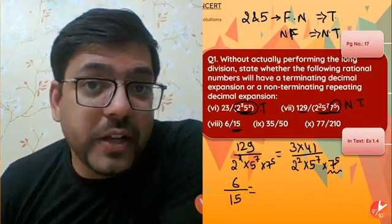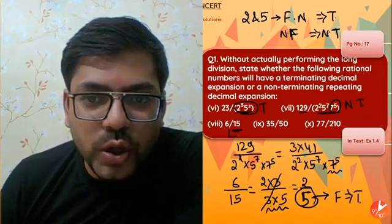For part 8: we have 6/15. At first glance the denominator looks non-terminating, but simplify first: 6 = 2×3 and 15 = 3×5, so the 3s cancel and you're left with 2/5. Since the denominator is now just 5, a friend number, this fraction is terminating.